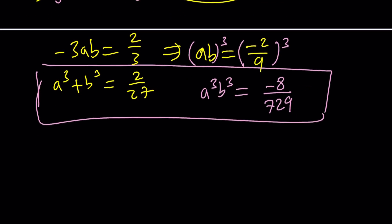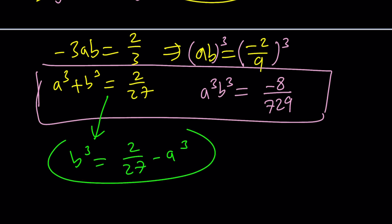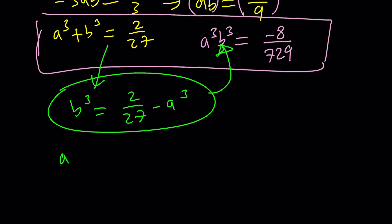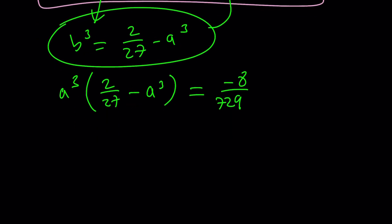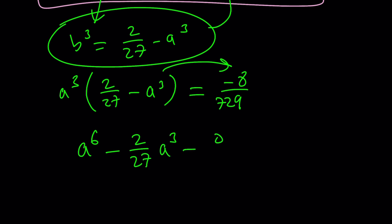Now we have a really cool system. This is not cubic — it's quadratic. If you replace b cubed with 2 over 27 minus a cubed and plug it in, you get a cubed multiplied by 2 over 27 minus a cubed, which replaces b cubed, equals negative 8 over 729. Distributing and putting everything on the right-hand side gives: a to the 6th minus 2 over 27 times a cubed minus 8 over 729 equals 0.